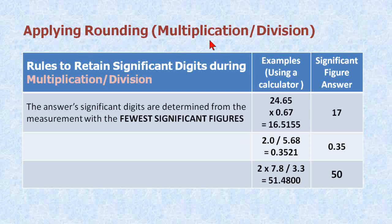Applying rounding during multiplication and division is less complex. It's just the number with the fewest significant figures determining the significant figure answer. There's a couple of examples here for you.